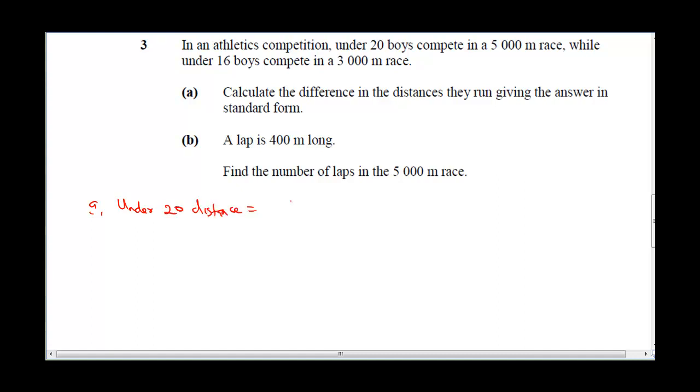The difference in distance run by the several boys - notice the under 20 boys run a total, so under 20 distance covered is 20 × 5000, which gives us 100,000 meters covered by them. The under 16 distance covered is 16 × 3000, which gives us 48,000 meters.